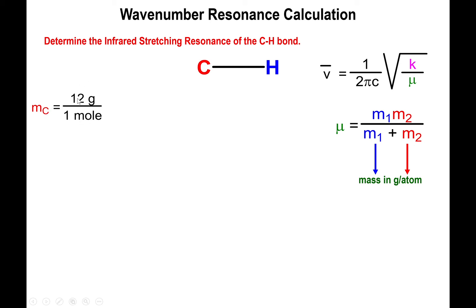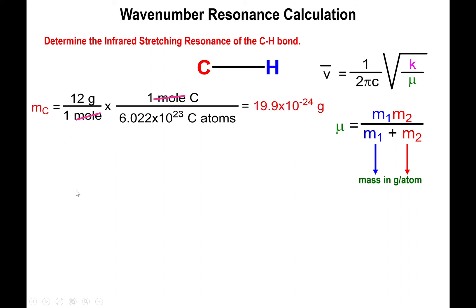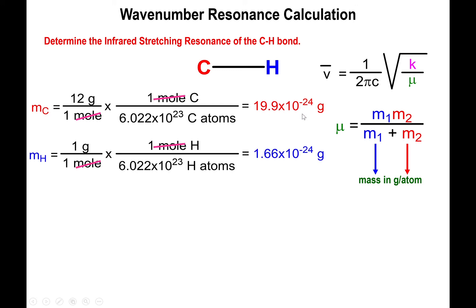The mass of carbon — I'm only going to use the whole number, no decimals. Carbon-12 has a mass of 12 grams per mole. What we need to do is convert this from grams per mole to grams per atom, using Avogadro's number as a conversion factor. Notice that atoms are placed in the denominator so that moles cancel out. This gives us 19.9 times 10 to the negative 24 grams. Doing the same for hydrogen — 1 gram per mole divided by Avogadro's number — gives 1.66 times 10 to the negative 24 grams.